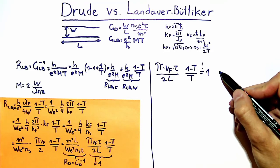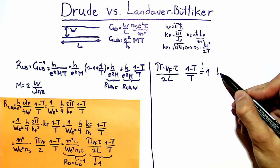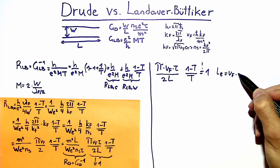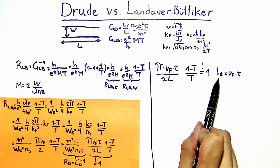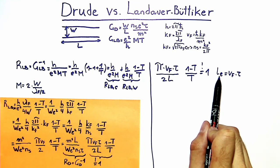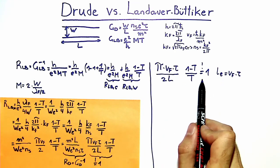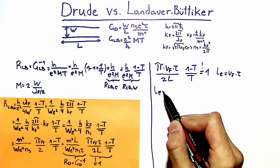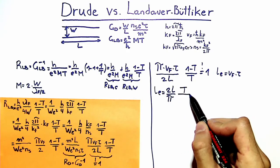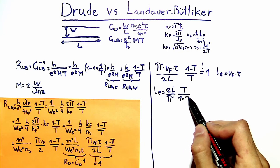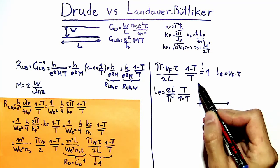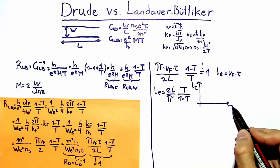We introduce the mean free path L_e, given by the product of the Fermi velocity and the scattering time tau. Replacing the Fermi velocity with the mean free path and solving for L_e, we find that the mean free path equals 2L/π multiplied by t/(1 − t). We make a small sketch of the dependence of the mean free path L_e on the average mode transmission t.